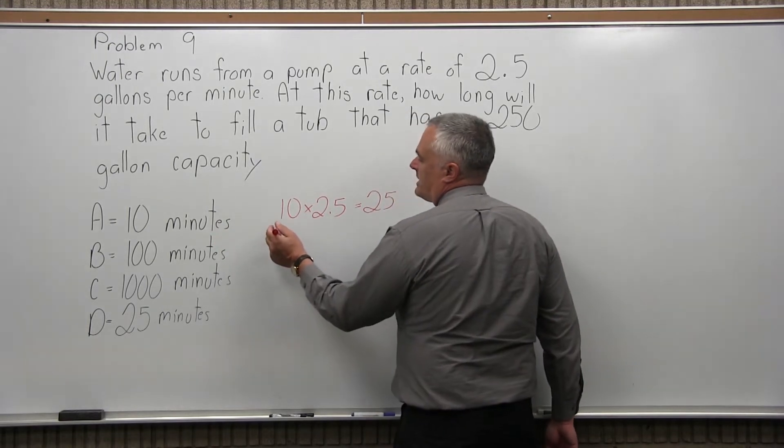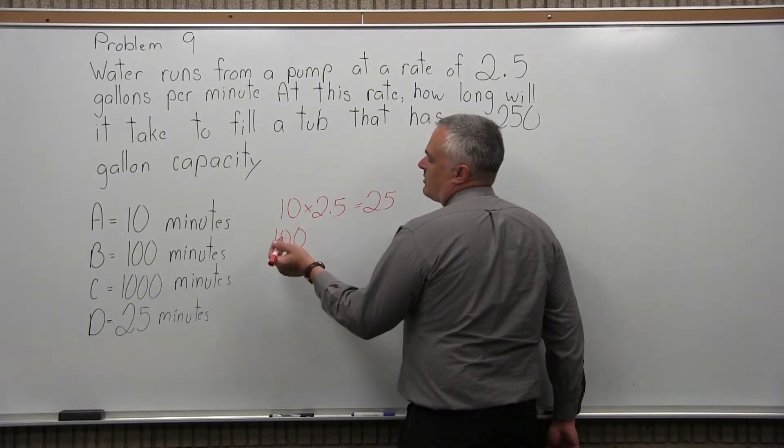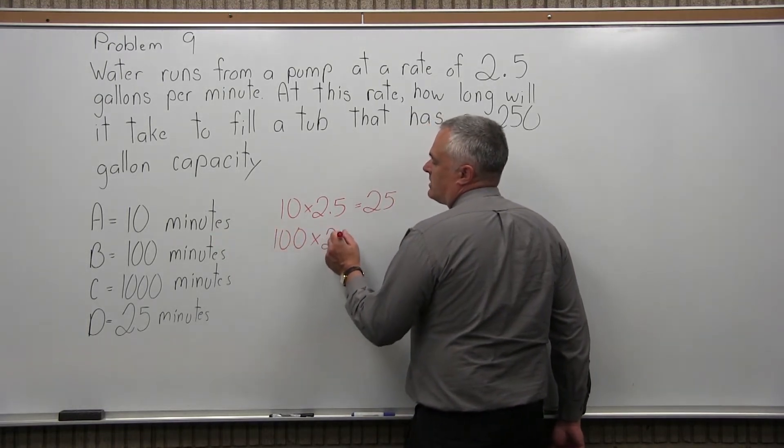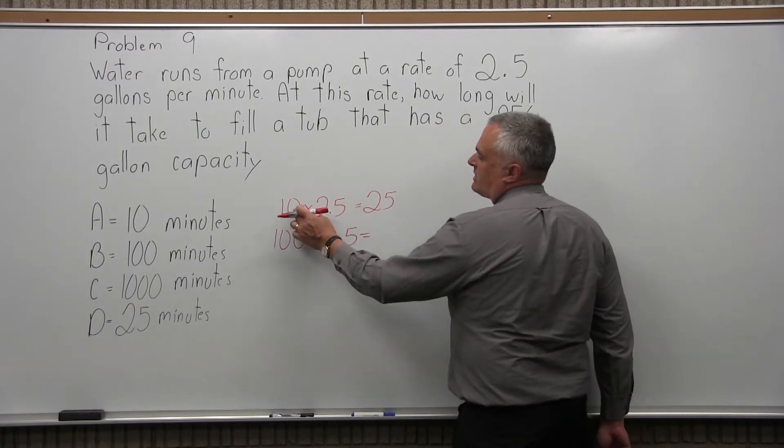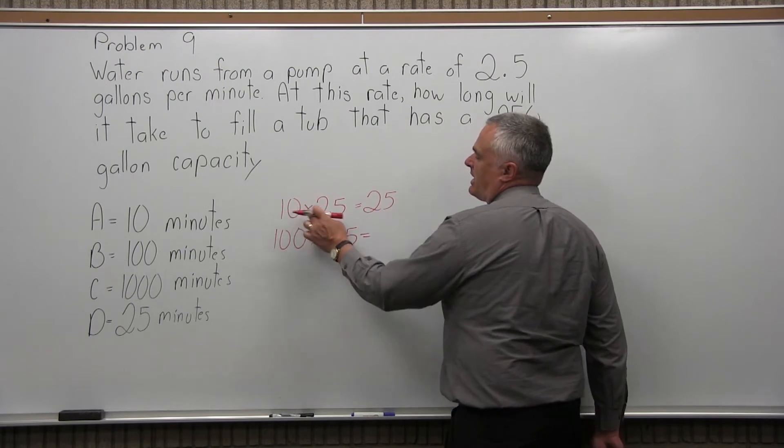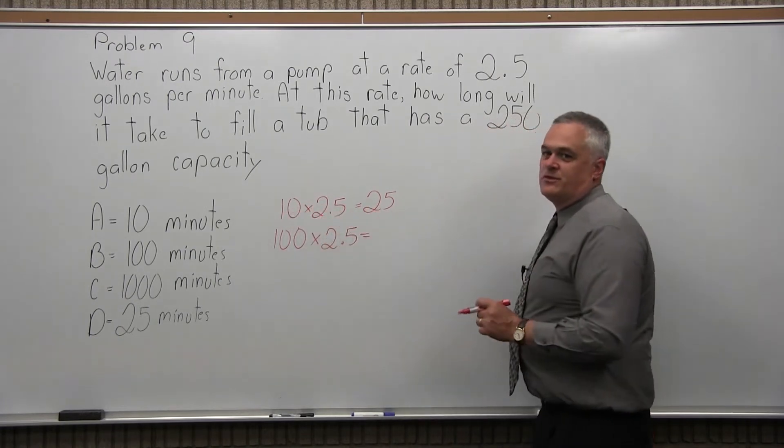So in 100 minutes, it'd be 100 times 2.5. Now to multiply this, what I'm doing, I'm getting these multiplications pretty quick. The number of zeros when you multiply is how many positions you move the decimal.